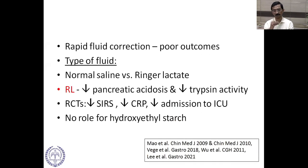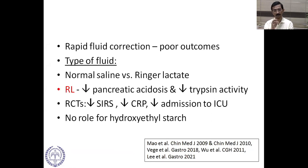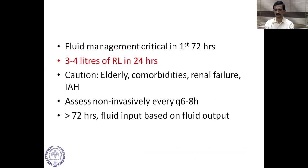Rapid fluid correction can lead to poor outcomes. Regarding type of fluid — normal saline versus Ringer's lactate — Ringer's lactate can decrease pancreatic acidosis and trypsin activity. RCTs have shown reduced SIRS and CRP, and a very recent RCT showed the main difference was decreased ICU admissions. There is no role for hydroxyethyl starch.